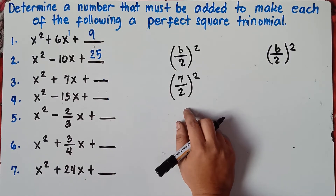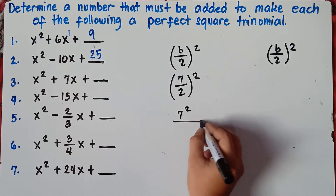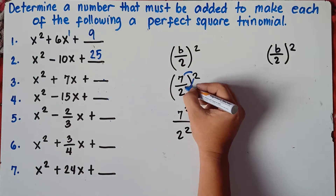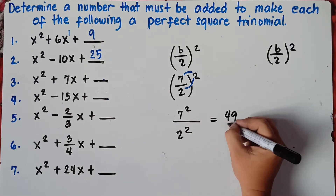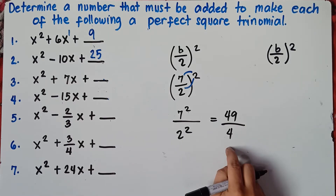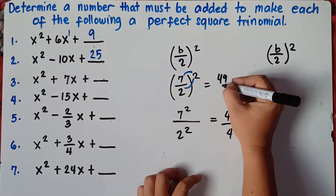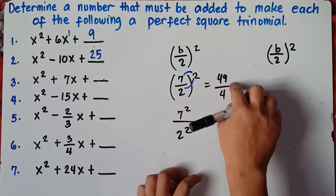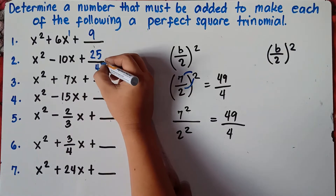So instead, just distribute: square the numerator and denominator separately. 7 squared is 7 times 7, that's 49. Then 2 squared is 2 times 2, that's 4. So the answer is 49 over 4.